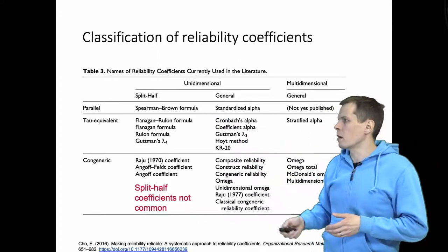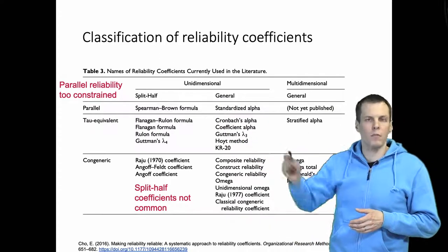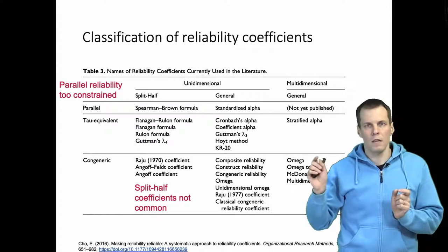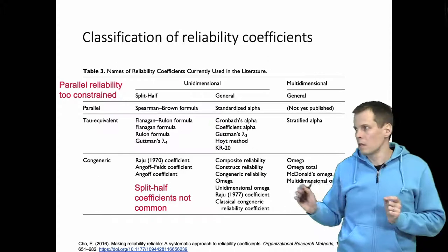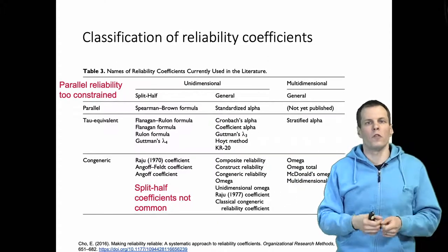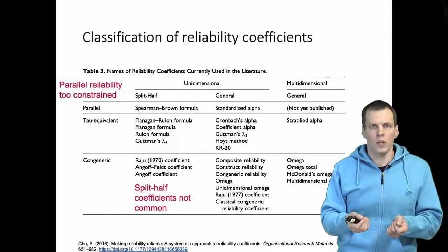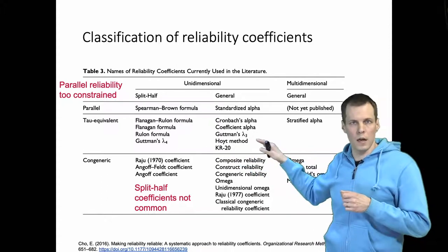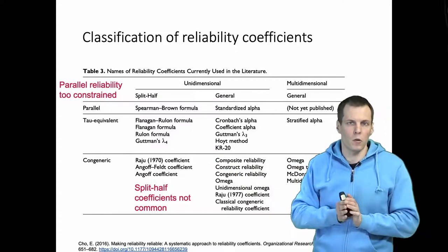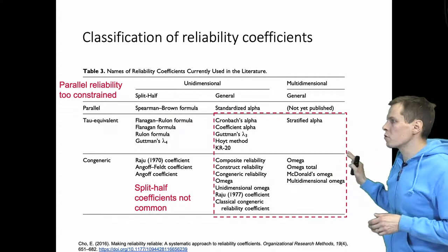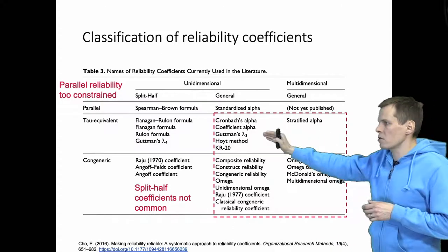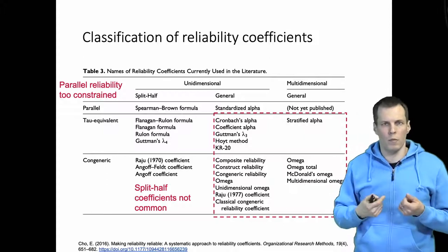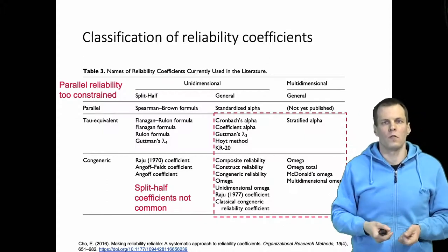Parallel reliability is also not something I'll cover, because it's typically too constrained. Parallel reliability requires the same true scores and equal error variances. In the tau equivalent condition, we focus on essential tau equivalence — true scores are the same but means can differ, which doesn't affect the correlation matrix. I'll focus on four classes: unidimensional tau equivalent, unidimensional congeneric, multidimensional tau equivalent, and multidimensional congeneric — and how to choose a reliability coefficient for each.